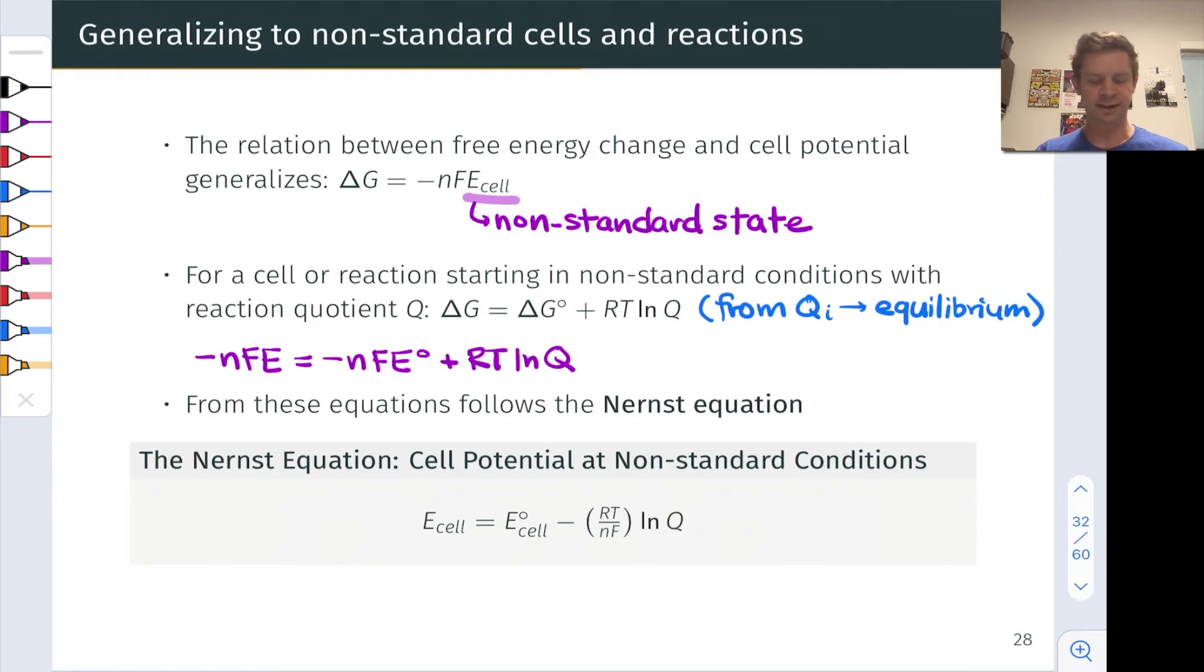And this is going to give us insight into the cell potential for a galvanic cell at a reaction quotient, let's just call that QI, and this corresponds to the change in free energy if you like in going from that initial reaction quotient QI to an equilibrium state, essentially to the cell fully discharged and at equilibrium.